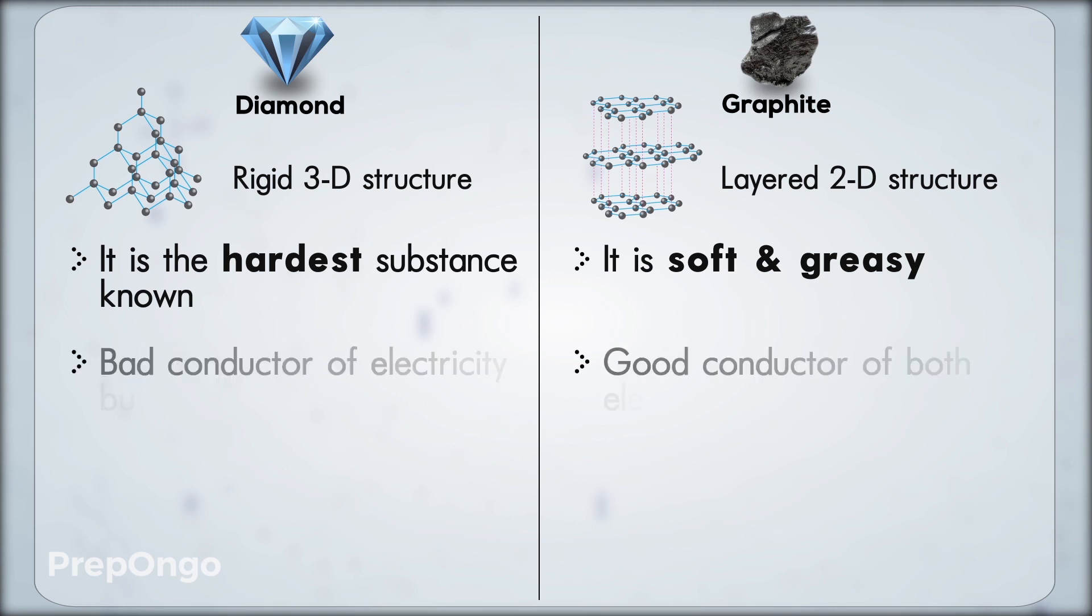Diamond is a bad conductor of electricity but a good conductor of heat and so it is used in cutting tools. Whereas graphite is a good conductor of heat and electricity both. Due to its conductivity it is used in making electrodes of the battery.